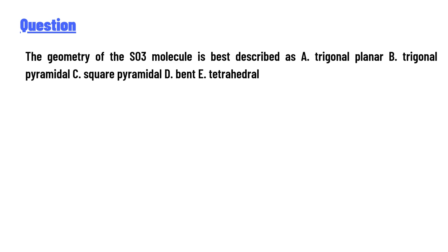The geometry of the SO3 molecule is best described as: A. trigonal planar, B. trigonal pyramidal, C. square pyramidal, D. bent, E. tetrahedral.